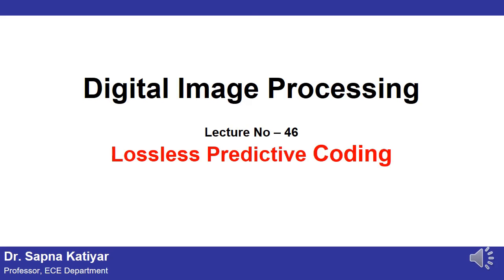Welcome to the video lecture series of digital image processing. Today's topic is lossless predictive coding, which is a type of lossless image compression algorithm. Lossless compression is where images are compressed without any loss of data. These algorithms are commonly used in applications where reliability and preservation of data is crucial, though the compression ratio is small compared to lossy compression.